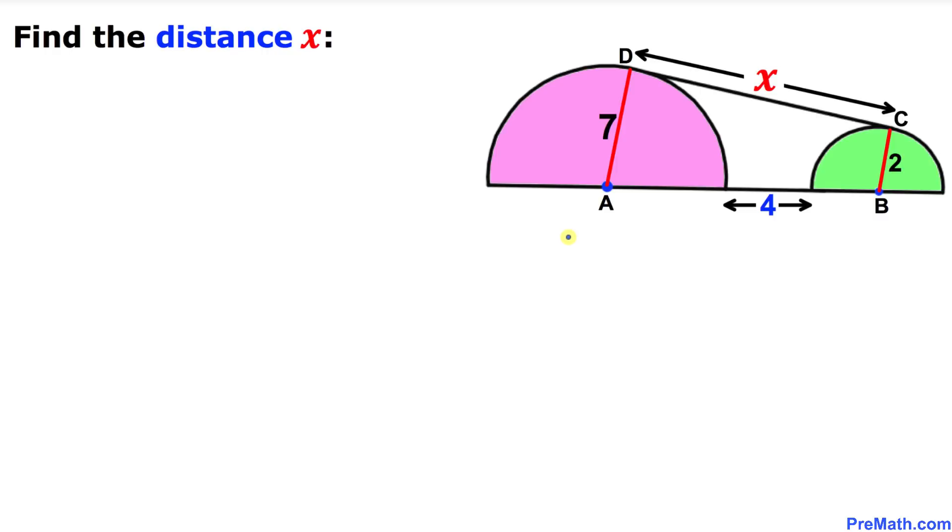Welcome to PreMath. In this video tutorial we have got these two semicircles whose radii are 2 and 7 respectively as you can see in this figure.